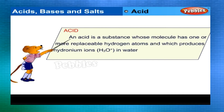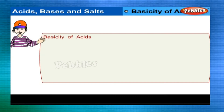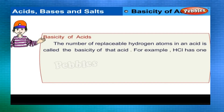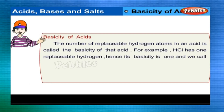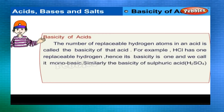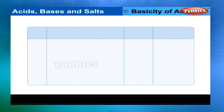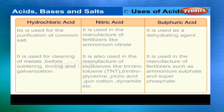An acid is a substance whose molecule has one or more replaceable hydrogen atoms and which produces hydronium ions (H₃O⁺) in water. Basicity of Acids: The number of replaceable hydrogen atoms in an acid is called its basicity. HCl has one replaceable hydrogen, so its basicity is 1 and it is monobasic. H₂SO₄ is dibasic (basicity 2), and H₃PO₄ is tribasic (basicity 3). The basicity of common acids and the uses of acids are tabulated above.